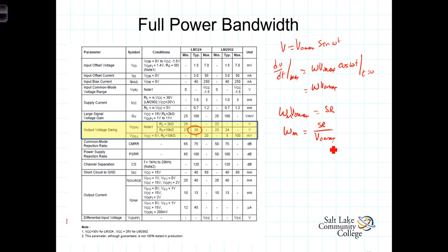That's the full power bandwidth in radians per second. And of course, F sub m, which would be the full power bandwidth in hertz, would be the slew rate divided by 2π Voutmax.